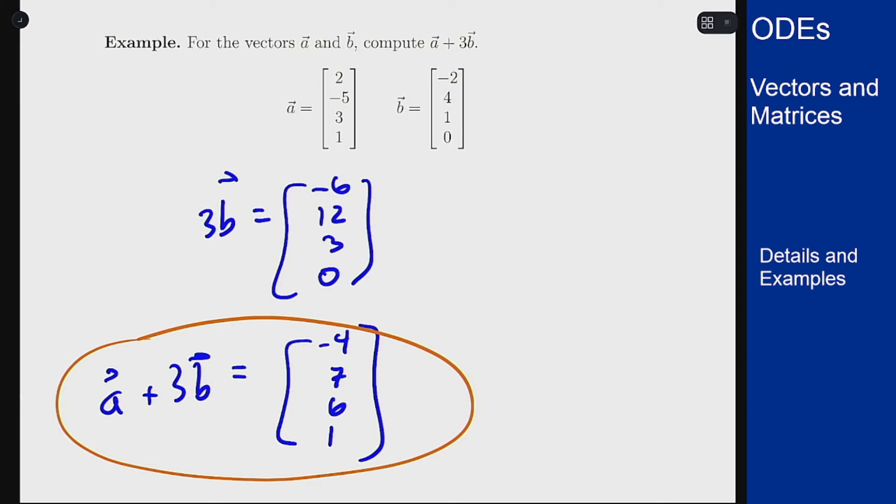You can also do this all in one step by looking at the fact that the sum a plus 3b should just be for each component, the component of a plus 3 times the component of b. So you would just go right away, 2 plus 3 times minus 2 is minus 4, and fill out the entire vector that way. That's a quick example of doing vector addition since it's done component-wise.